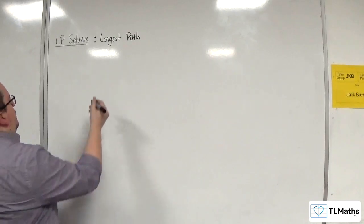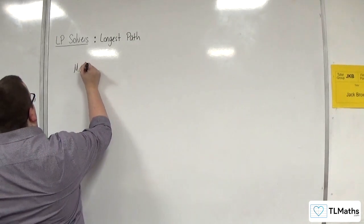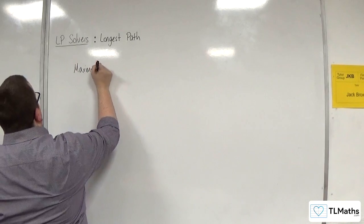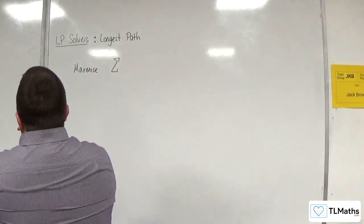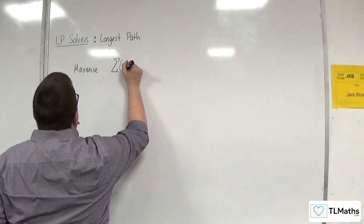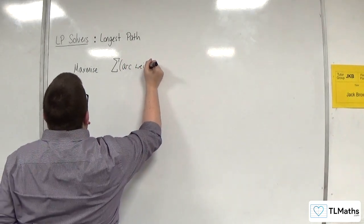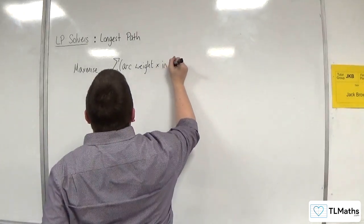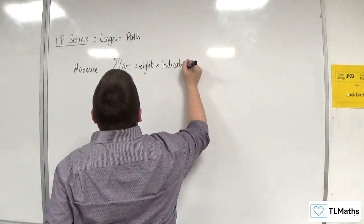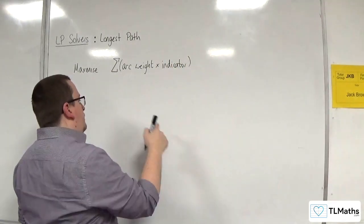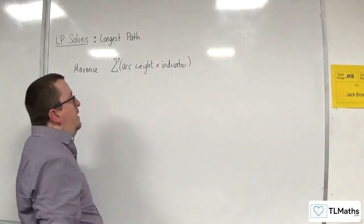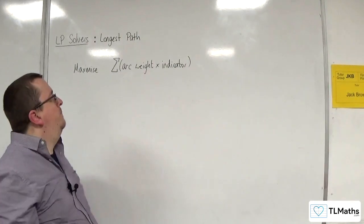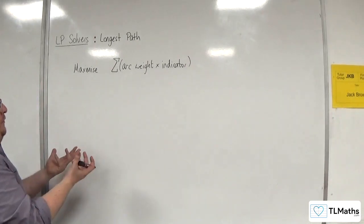First of all you need your objective function, and this is to maximize. We want the sum of the arc weights, and each of the arc weights is going to be multiplied by its indicator variable. So if you've got A to B and it's of weight 5, you're going to have 5 times AB. And you're going to add all of those together.